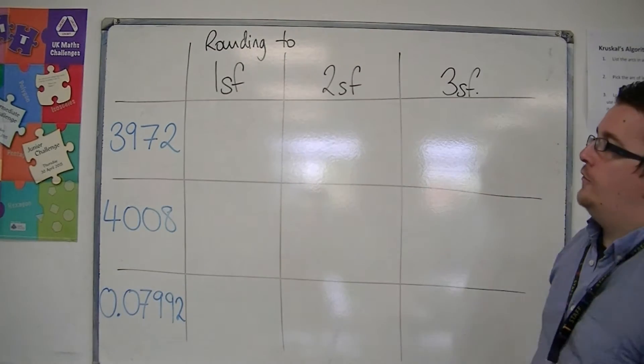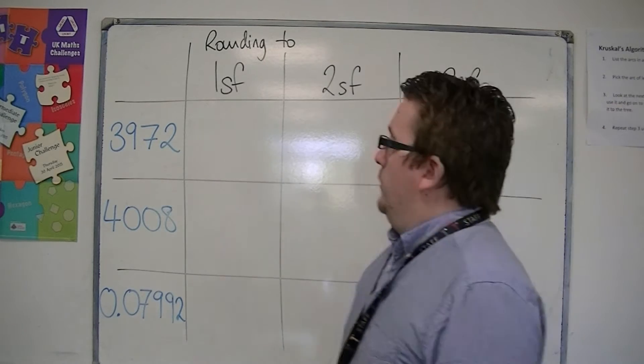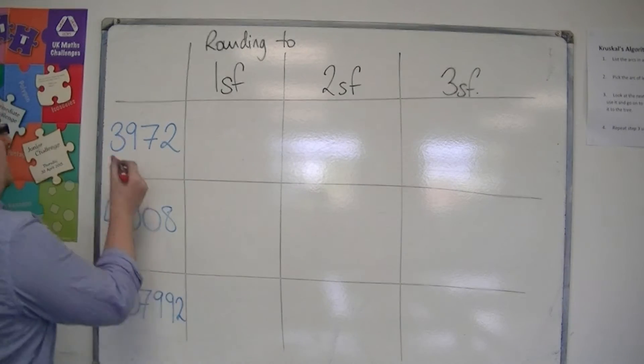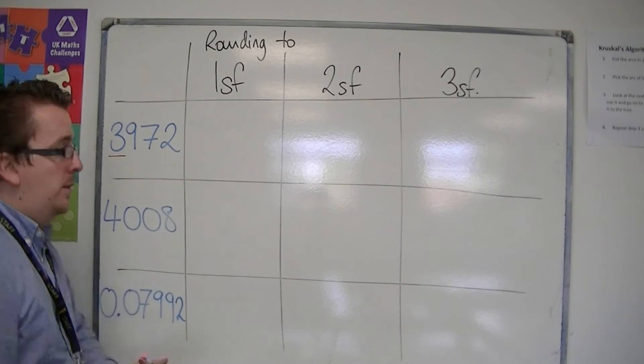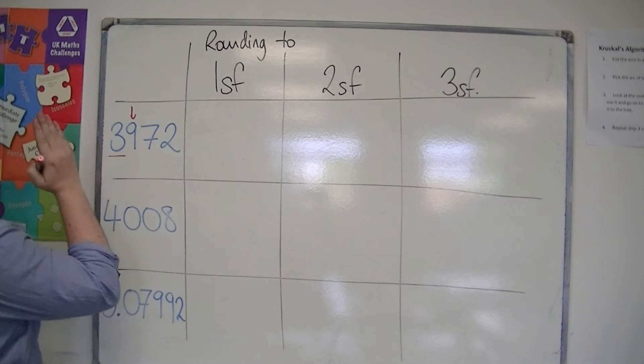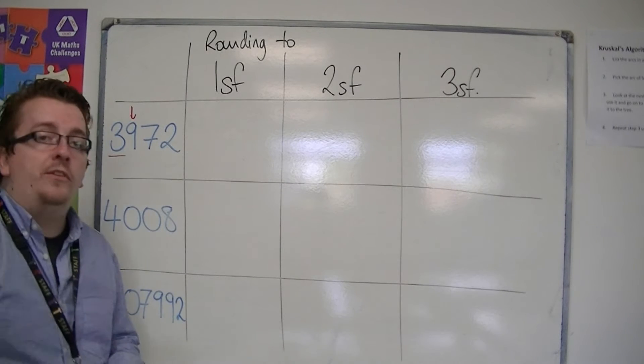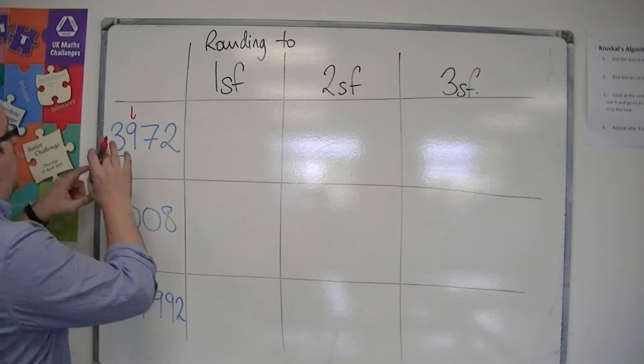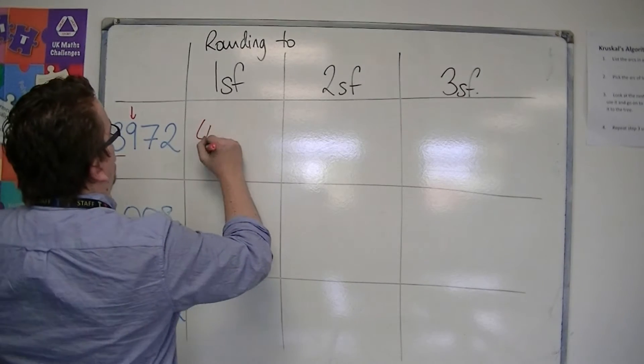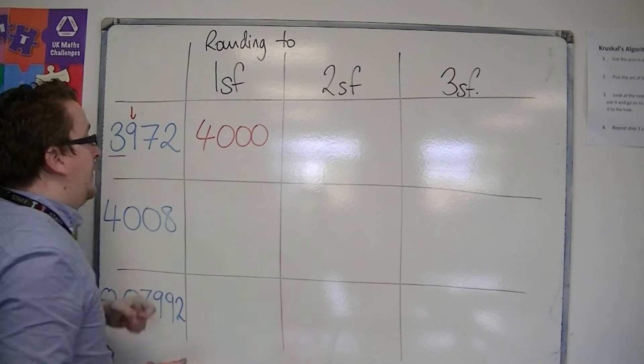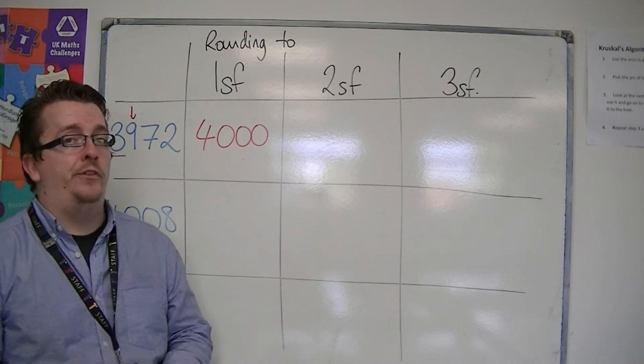We're going to start off with 3,972 to one significant figure. So I look at the first significant figure column, I look one to the right, and that is telling me to round up because it's five or more. So I would round up to 4,000. So it's exactly the same question as rounding to the nearest thousand in this case.